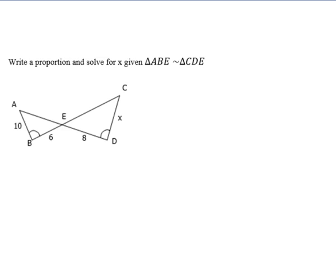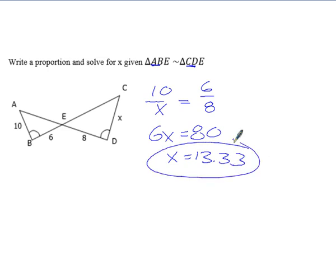So the next one, write a proportion and solve for x given that the triangles are similar. So this is kind of what we worked on last section. I'm telling you ahead of time that these things are congruent. So now it's just a matter of matching up the right parts. So AB would be similar to CD. So CD is x. So we would say 10 is to x as, and then BE matches up with ED. So we would say as 6 is to 8. Cross multiply and solve. A lot of this unit is just cross multiplying and solving. So we get 13.333 repeating, and you just put 13.33.